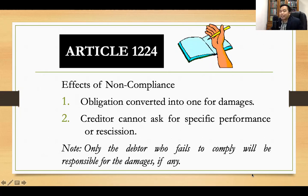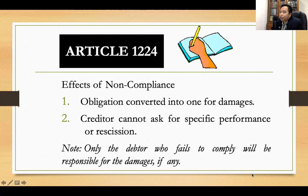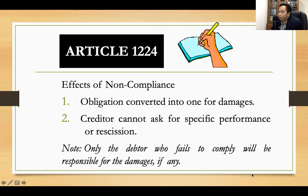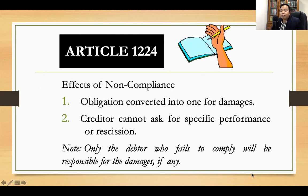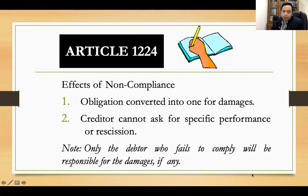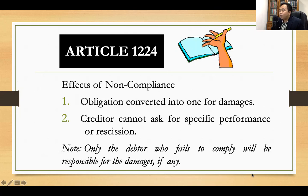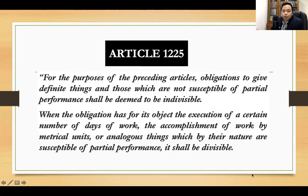The creditor cannot ask for specific performance because in a joint indivisible obligation, each debtor has their own part of the undertaking or prestation, and it cannot be performed without the performance of all joint indivisible debtors. So the creditor may not compel the other innocent joint indivisible debtors to perform. The creditor may also not ask for rescission of the contract, and the only remedy left is to ask for damages from the guilty debtor.